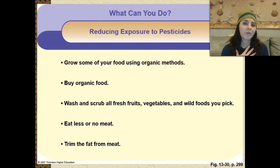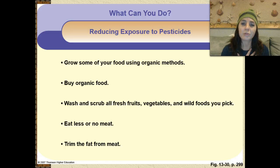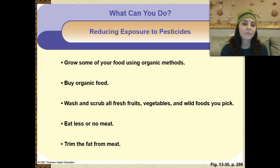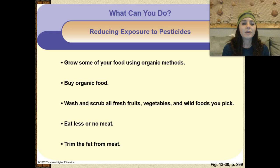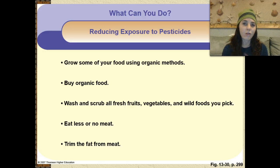So what can we as a society do to help reduce our exposure to pesticides? You can actually grow some of your own food using organic methods. You can buy organic food. You could wash and scrub all fresh fruits, vegetables, as well as wild foods that you pick. You can eat less or no meat at all, and if you eat meat, you should trim the fat from it because that's where a lot of the toxins are going to be stored.